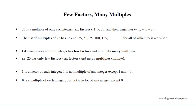Now, if we consider the number 25, we can see that 25 is a multiple of only 6 integers, or 6 factors, or 6 divisors. Here, 1, 5, 25, and their negatives minus 1, minus 5, minus 25 — all these 6 integers are the 6 factors or 6 divisors of 25.